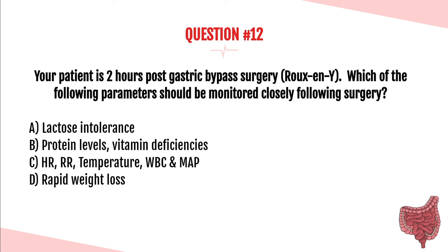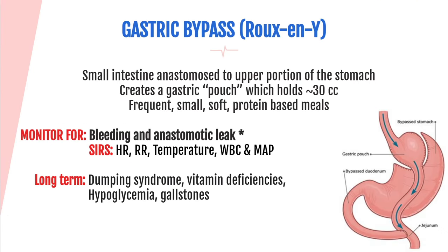The answer is C — heart rate, respiration rate, temperature, white blood cell count, and MAP. With any surgical patient, watch for infection, but especially after gastric bypass surgery where two to three anastomoses are made in the abdomen, placing patients at high risk for leakage of intestinal content into the peritoneal cavity. Watch for SIRS and sepsis criteria. The Roux-en-Y is a bariatric surgery where the small intestine is anastomosed to the upper stomach to create a gastric pouch holding about 30 cc's, intended for obese patients seeking weight loss.